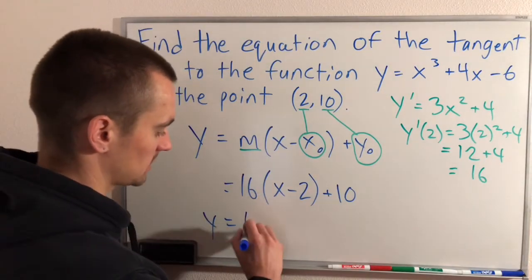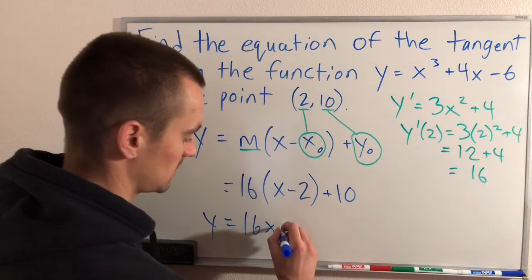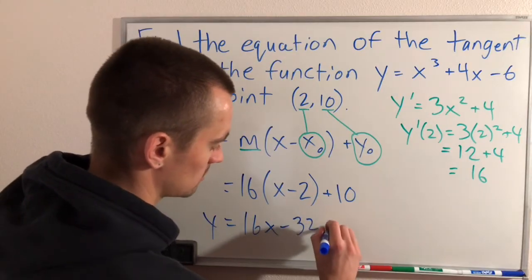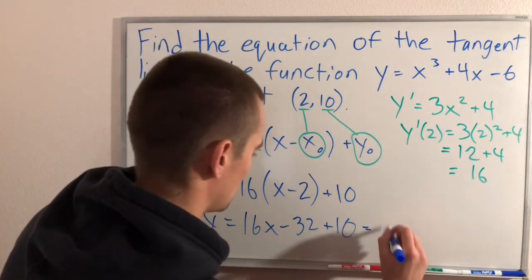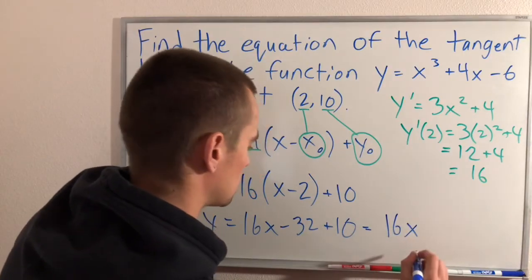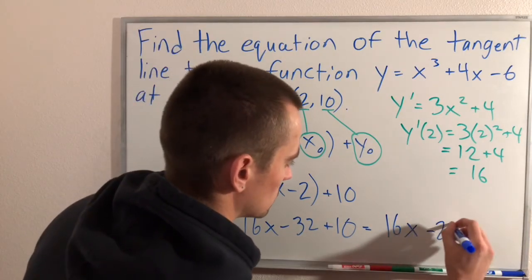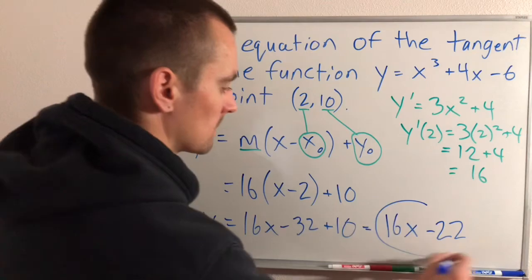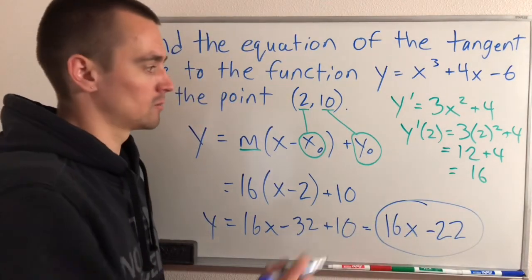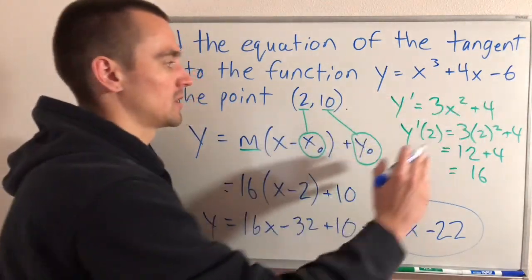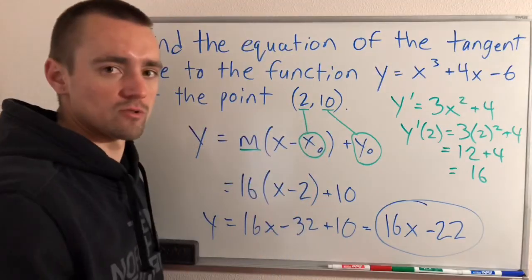Distribute the 16 and add like terms. 16 times x, 16 times 2 is minus 32, plus 10, which gives us y = 16x - 22. That's the equation of our tangent line, which has the same slope as this function at this point and goes through that point.